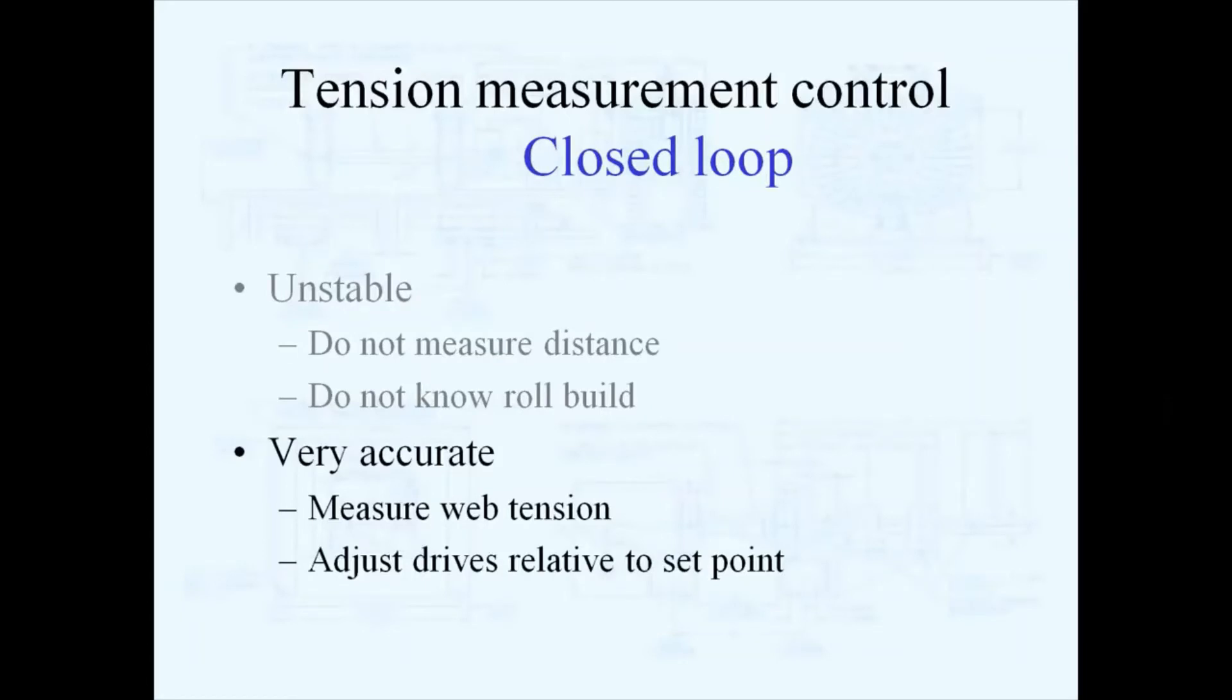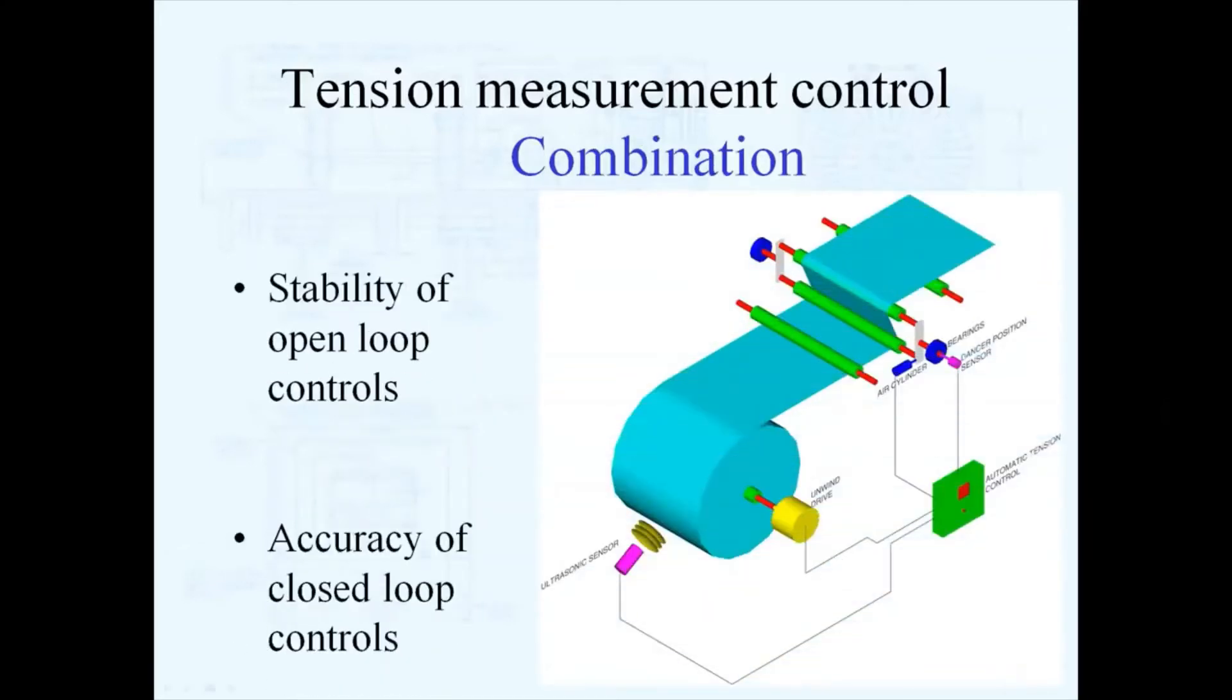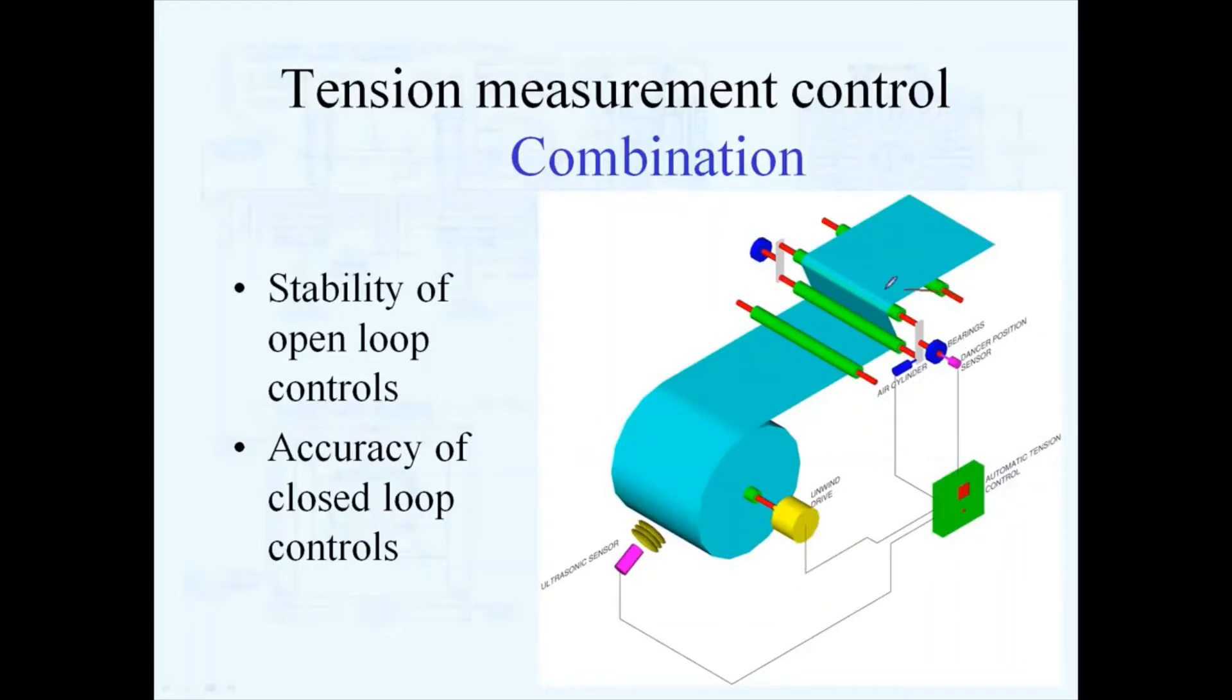A lot of times a closed loop control, whether it's dancer or load cell, will be designed to tune the output of an open loop system. So you may have an open loop system that will see roll radius change on an unwind or rewind and will put in a given output to this control and tell the control what the radius is. That control will adjust torque output of the drive relative to that roll radius change.